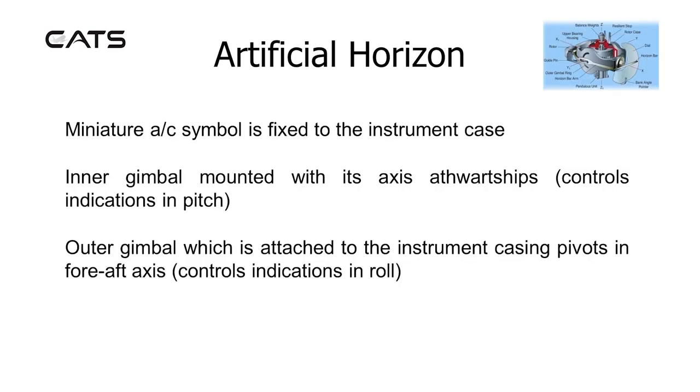A miniature aircraft symbol is fixed to the instrument case. The inner gimbal is mounted with its axis athwartships and controls indications in pitch. The outer gimbal, which is attached to the instrument casing, pivots in the fore-aft axis and controls indications in roll.